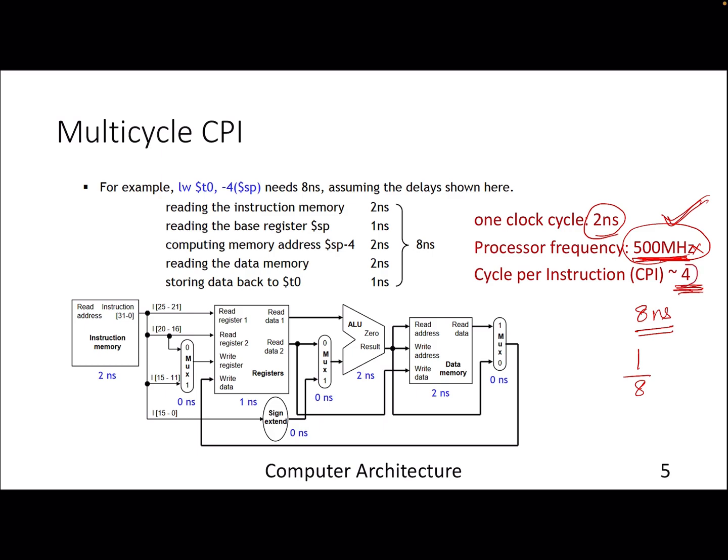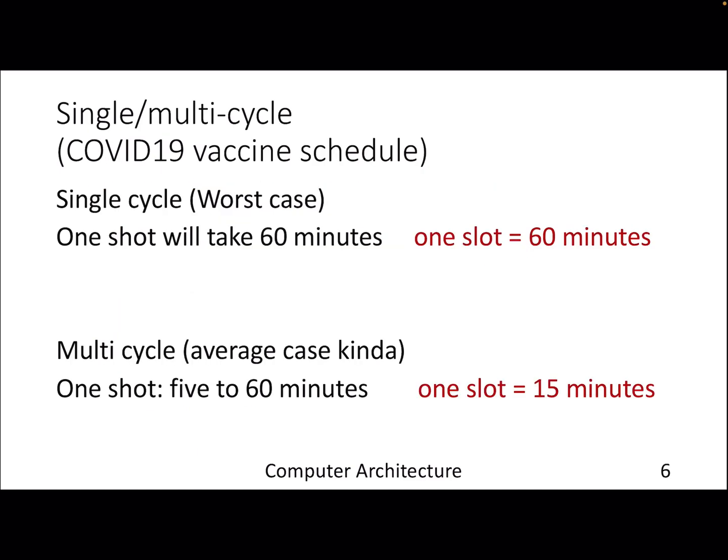But now the cycles per instruction has gone down, which means for one instruction you are spending four cycles. But in the previous case, in the single-cycle CPU, the CPI or IPC used to be one—we are executing one instruction per cycle. So this is a trade-off now. In single-cycle CPU your clock cycle was pretty slow. With multi-cycle your clock cycle is faster but your CPI is low.